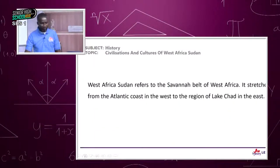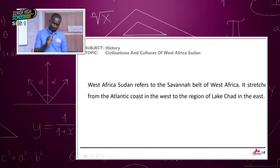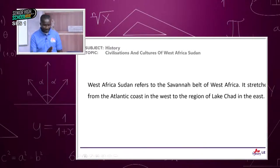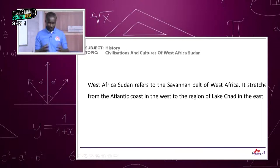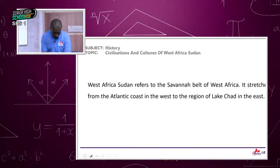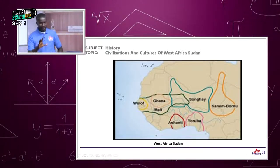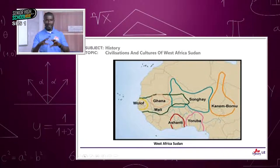West Africa Sudan refers to the Savannah belt of West Africa. It stretches from the Atlantic coast in the west to the region of Lake Chad in the east. Specifically, we are defining West Africa — ECOWAS — that's the definition we are giving ourselves.